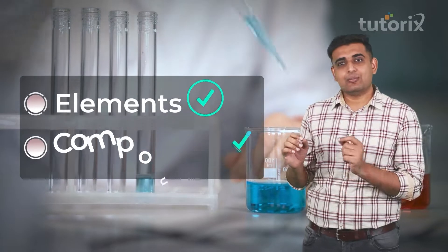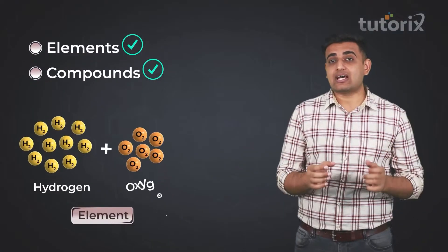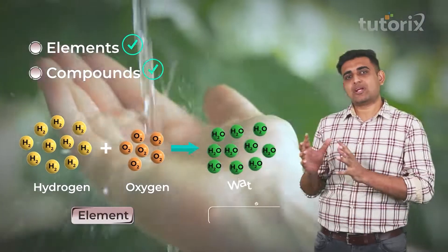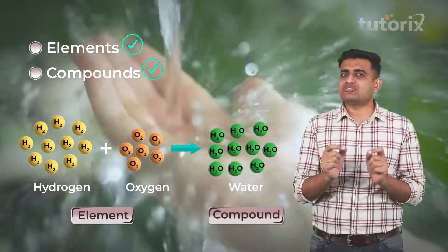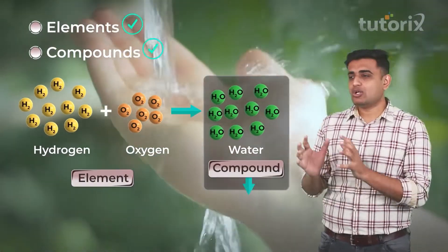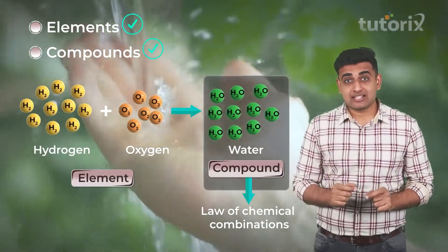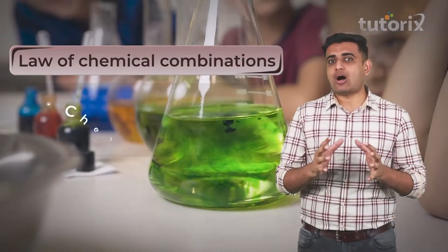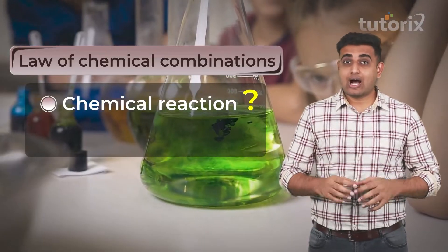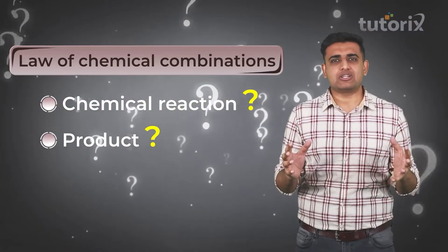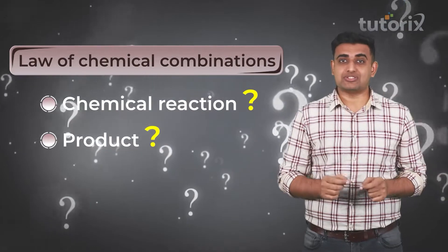Now that we have understood what are elements and compounds, and how various elements are combined in a fixed definite ratio to form a compound, the formation of these compounds is governed by laws of chemical combinations, which helps us in understanding the basics of how chemical reactions take place, how much product is formed, and many such related questions.